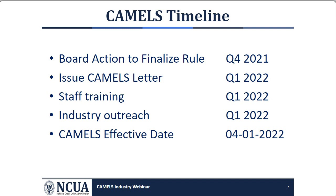This slide displays the timeline for the addition of S to CAMEL. The NCUA board finalized the CAMELS rule in October 2021, and in the fourth quarter of last year NCUA became operationally ready to implement CAMELS. NCUA chairman Harper issued the CAMELS letter to credit unions in March, earlier this week.